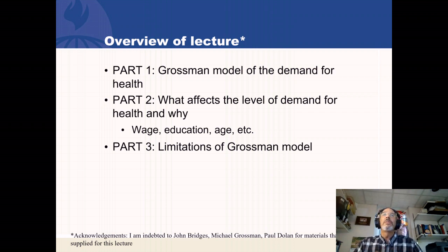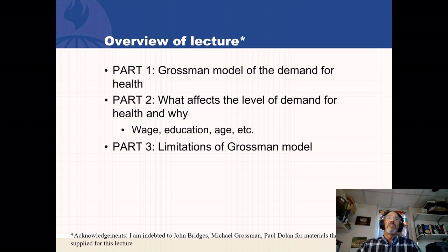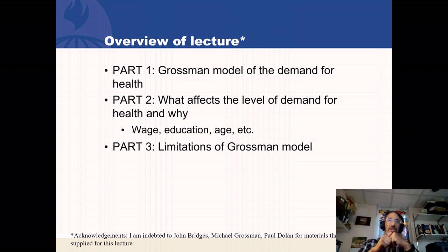Part two, we'll use the model to try to understand what affects the level of demand for health and why. We'll discover that some of the main determinants of the demand for health are wages, education, age, and a few other things. And in part three, we'll discuss the limitations of the Grossman model.